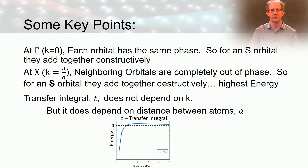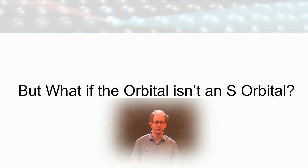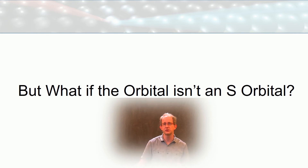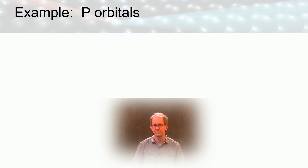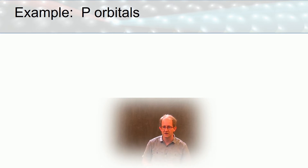That was for a line of atoms with only s orbitals. But what happens if our orbital is a p orbital or d orbital? We'll walk through an example with p orbitals, and then I'll ask you what happens with d orbitals. There are obviously three p orbitals — px, py, and pz — and we need to make a coordinate assignment. We'll have our atoms all aligned on the x-axis, so we need to distinguish pz and py.